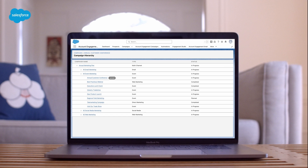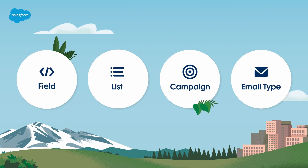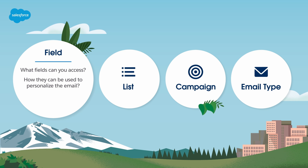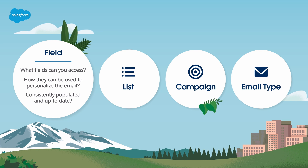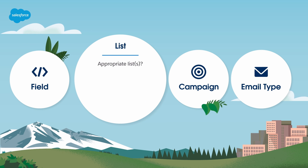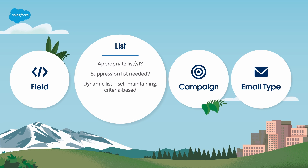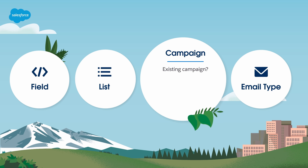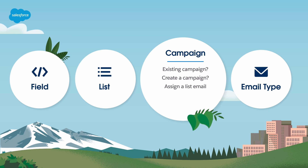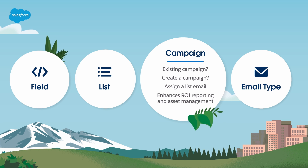Now that your account is ready, the next step is to prepare the supporting assets and information you'll use when building the email. Consider what fields you have access to and how they could be used to personalize the email or segment your prospects into lists. Are these fields consistently populated and up to date, or should they be audited first? Do you have an appropriate recipient list or lists available, and if not, how will you create it? Will you require a suppression list as well? Opt for a dynamic list for a self-maintaining criteria-based list, or a static list to add and remove prospects manually or using automations. Is there an existing campaign for this marketing initiative, or do you need to create one? Assigning a list email to a campaign enhances ROI reporting and asset management.